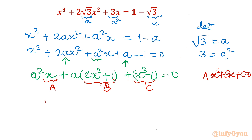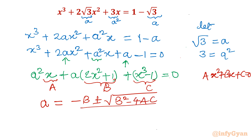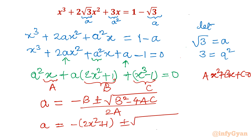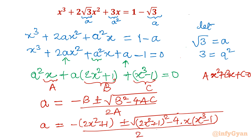Applying the quadratic formula to solve for a: a = [−b ± √(b² − 4ac)] / 2a. Substituting: a = [−(2x² + 1) ± √((2x² + 1)² − 4·x·(x³ − 1))] / 2x. Now let us simplify the expression inside the square root.